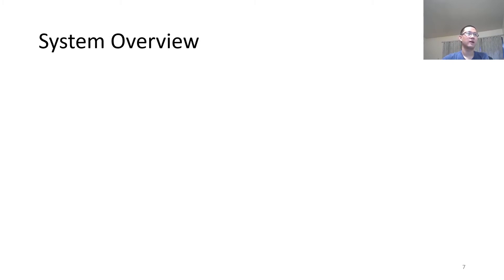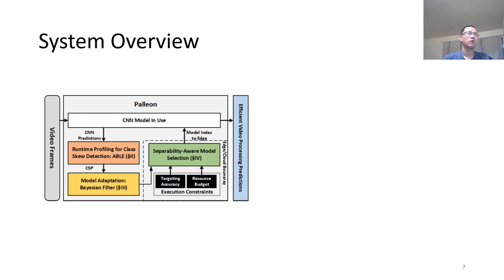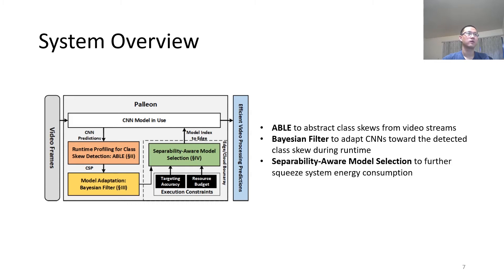To this end, we build Palin, a runtime system for efficient video processing. Palin uses the CNN model to recognize a sequence of video frames. These system predictions are fed into ABLE to abstract class skews from video streams. Then, Bayesian filter adapts CNNs towards the detected class skew during runtime. We also have separability-aware model selection to further squeeze system energy consumption.